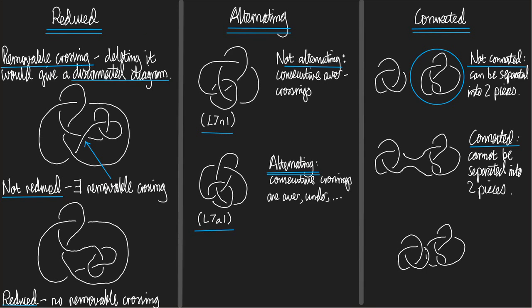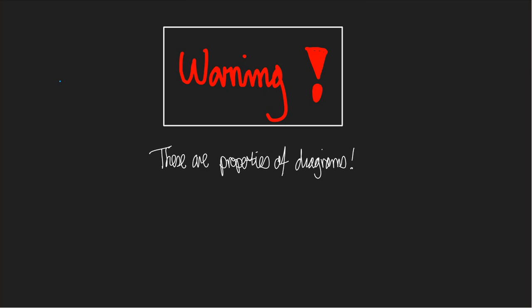I would like to end with a warning in bright red: these properties — reduced, alternating, and connected — are properties of diagrams, not of links. Just as we are always in danger of confusing a diagram with a link, that can really happen here. So take great care. That is the end of the lecture.